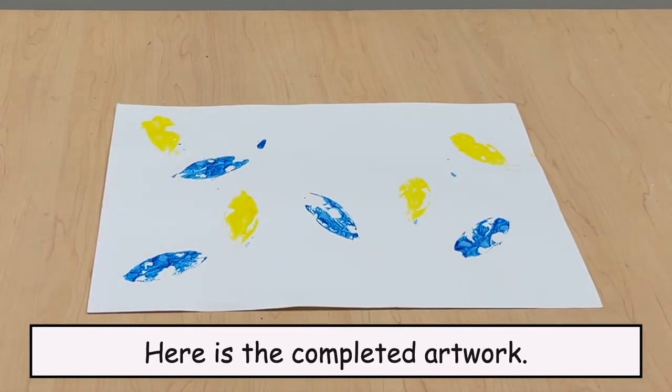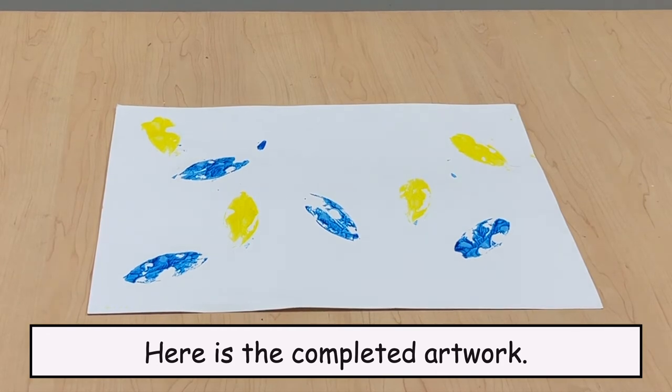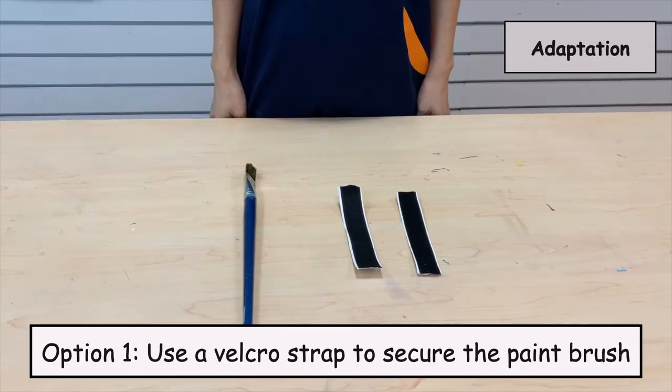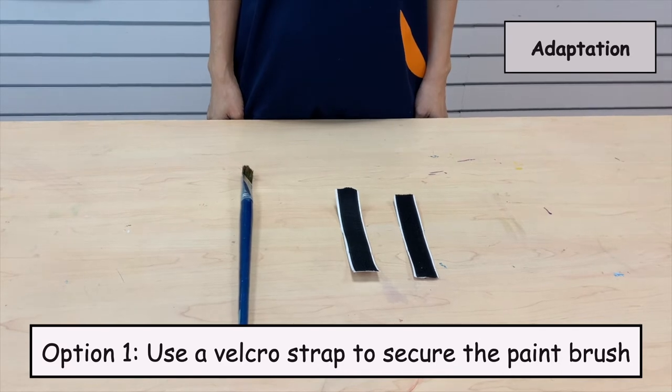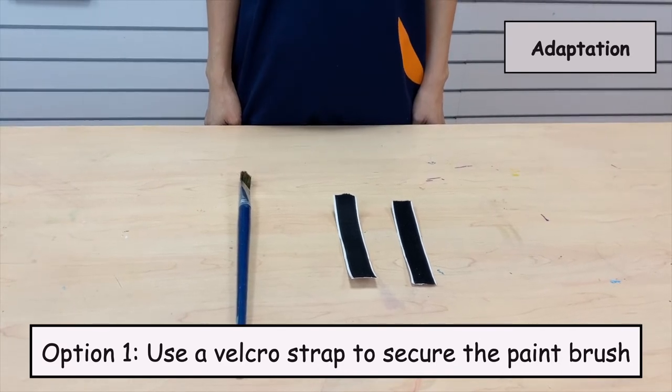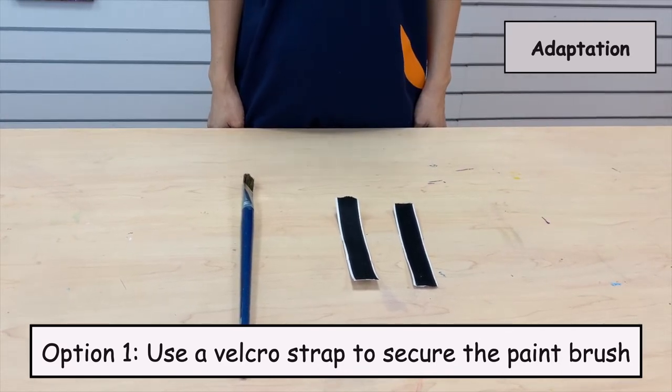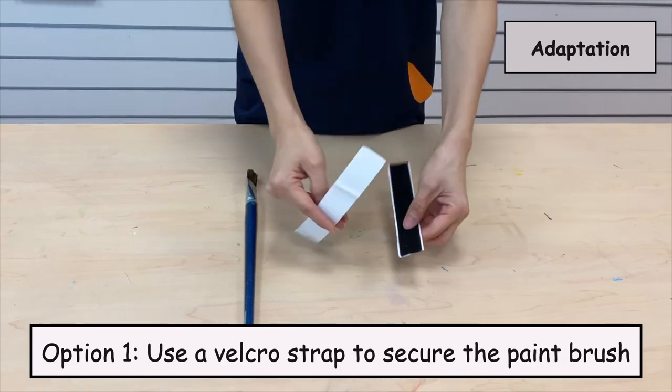Here is the completed artwork. Here are some adaptations for you to consider. Option 1: Use a velcro strap to secure the paintbrush onto your student's hand.